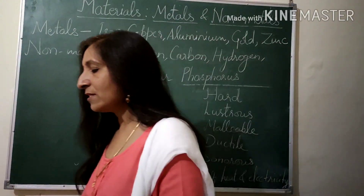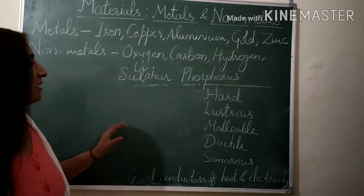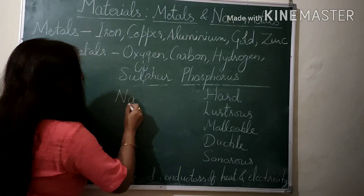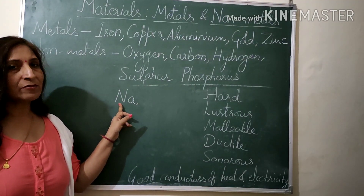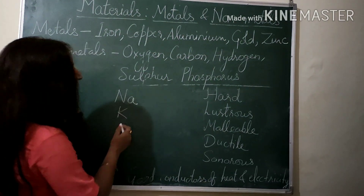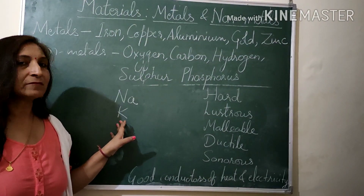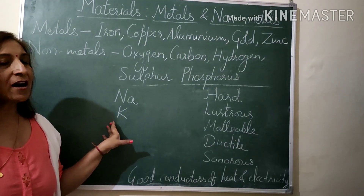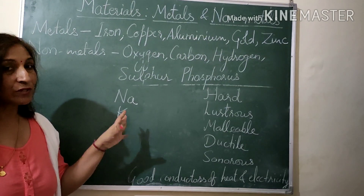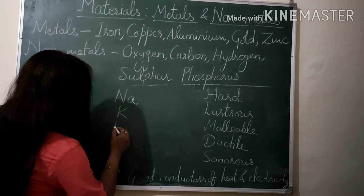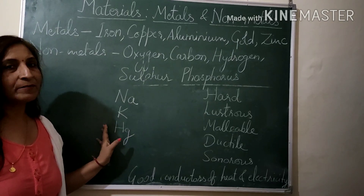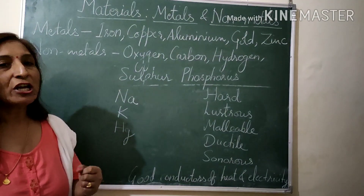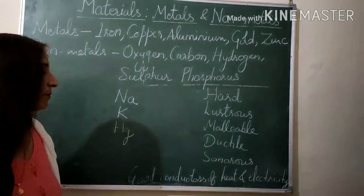There are some exceptions associated with metals and non-metals. Sodium (symbol Na, Latin: Natrium) and Potassium (symbol K, Latin: Kalium) are metals, but they can be easily cut with a knife — so these are soft metals, which is different from other metals. Mercury (symbol Hg, Latin: Hydrargyrum) is a metal but exists in liquid form, which is also an exception.